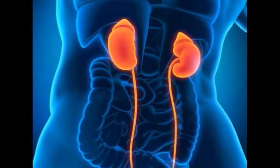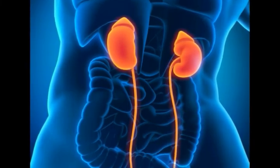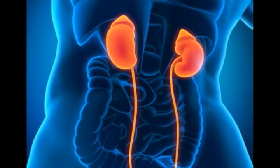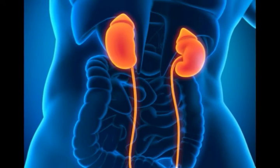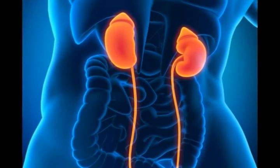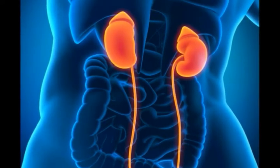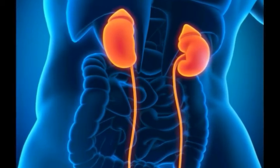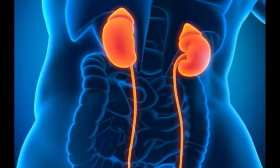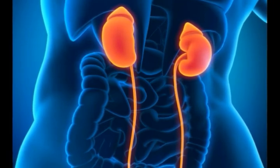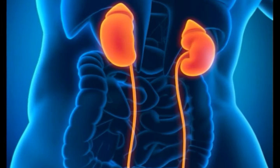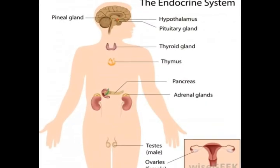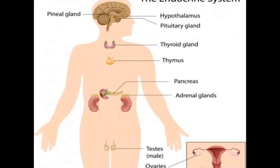On reaching the thyroid, TSH stimulates the cells to secrete thyroid hormones. These are important hormones that affect the physiology of practically all of the body's cells. When the level of thyroid hormones in the blood reaches an upper threshold, the cells in the hypothalamus that make and secrete TRH are affected. The result is that TRH, then TSH, and finally thyroid hormone levels fall.